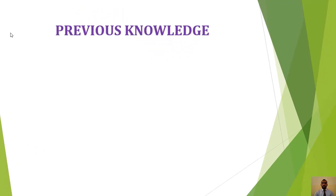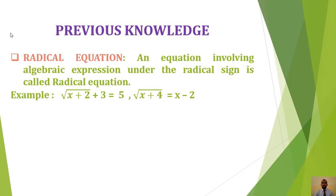First of all, we discuss previous knowledge. A radical equation is an equation involving an algebraic expression under the radical sign. Dear students, the radical sign is not only the square root — it includes all types of roots: cube root, fourth root, fifth root, and nth root. For example: √(x+2) + 3 = 5, and √(x+4) = x−2. Both of these are radical equations.